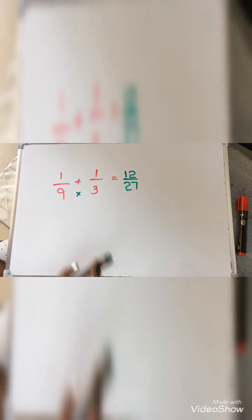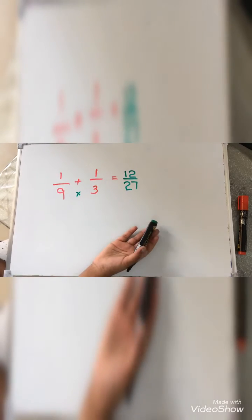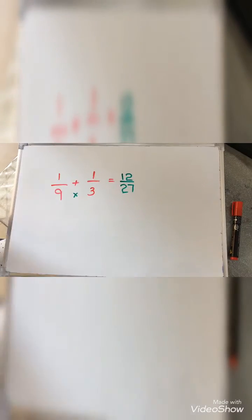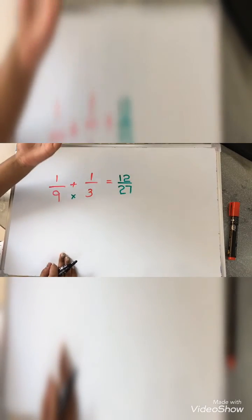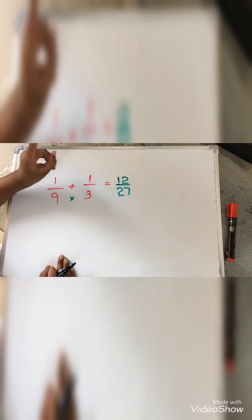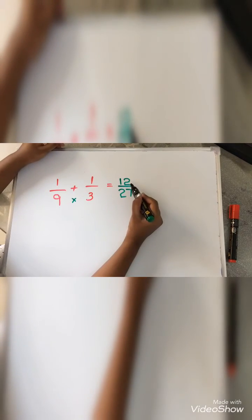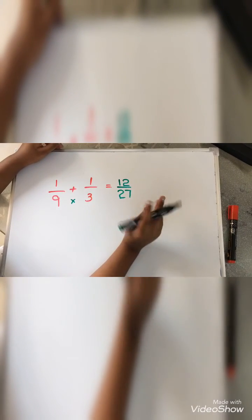Check whether the numerator and denominator come under the same table. Yes, this numerator and denominator will come under the 3 table. Now I will tell you the lowest form. So 12 will come in the 3 table 4 times.